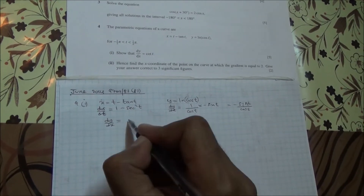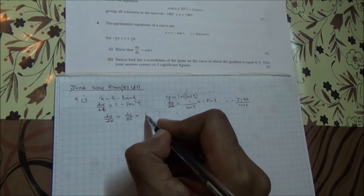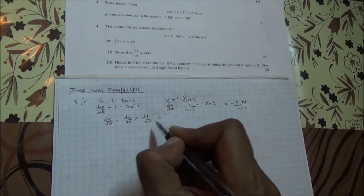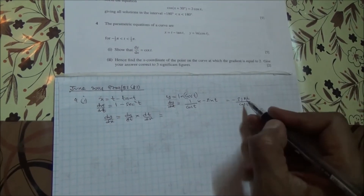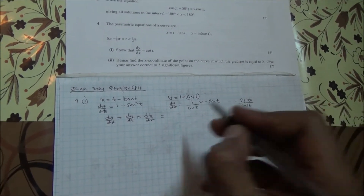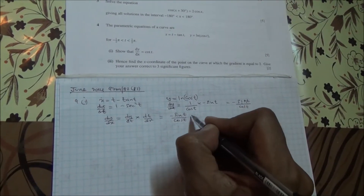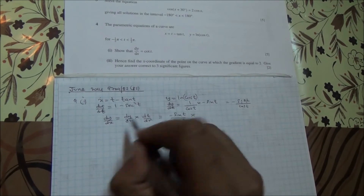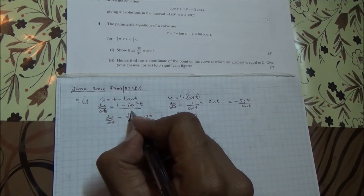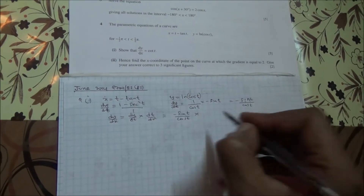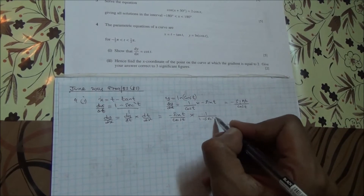So dy/dx is equal to dy/dt times dt/dx. dy/dt is minus sin(t) over cos(t), multiplied by dt/dx. The reciprocal of dx/dt gives us 1 over (1 minus sec²(t)).